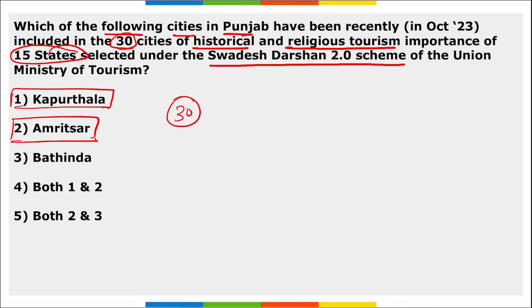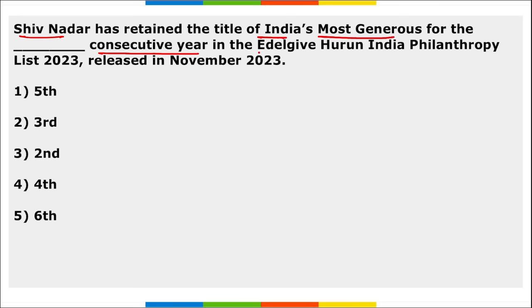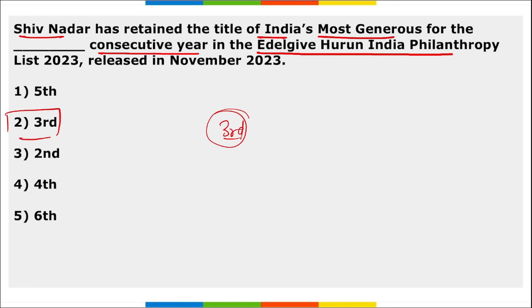Shiv Nadar retained the title of India's most generous person for the third consecutive year in the EdelGive Hurun India Philanthropy List 2023. On second position was Azim Premji, founder and chairman of Wipro. Mukesh Ambani was on the third position.